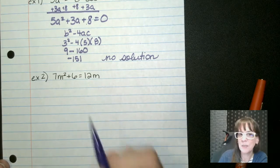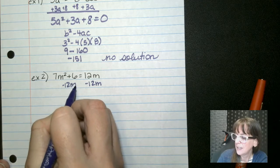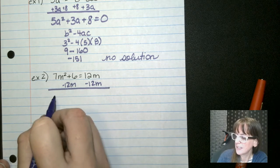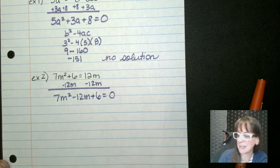So let's go ahead and set this equal to 0 by minusing 12m from both sides. That gives us 7m squared minus 12m plus 6 equals 0.